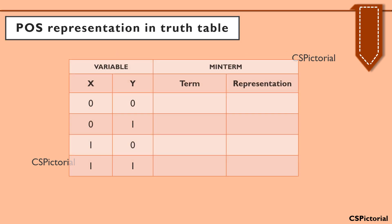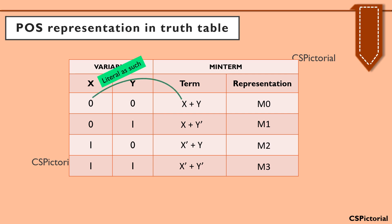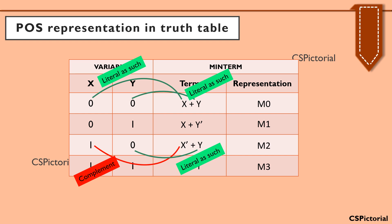Let us consider a truth table with two input variables. The truth table representation for max terms will be capital M0, M1, M2, M3, etc., depending on the number of input variables. To derive the max term, always remember: for POS, if the value of the input variable is zero, write the literal as such in the max term, and if the value of the input variable is one, the max term will have the complement of the literal.